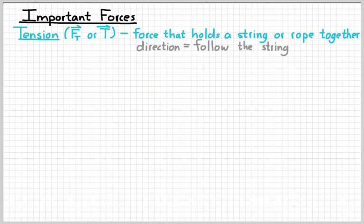The next important force is the force of tension. Tension is given the symbol F subscript T, or sometimes just a capital T with a vector arrow above it, because we can end up with multiple tensions in a given situation. Tension is simply the force that holds a string, rope, chain, or anything like that together. It's a useful force because we can always figure out its direction just by following the string — if the string is going to the right, the force must be to the right.